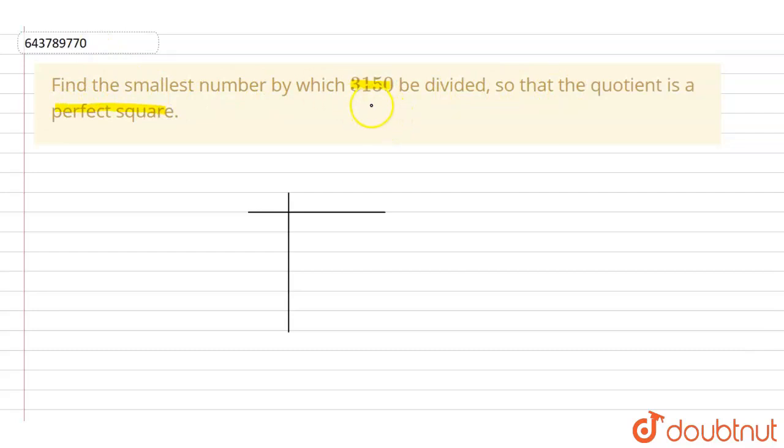Now we are given that this 3150 number is not a perfect square, but we have to make it a perfect square. We have to find out the smallest number by which it should be divided so that this is a perfect square.